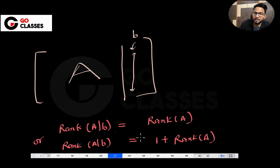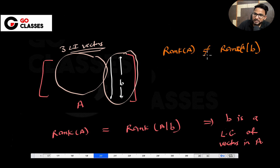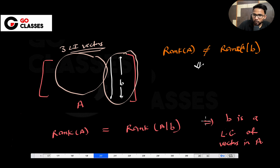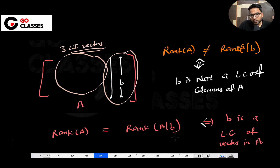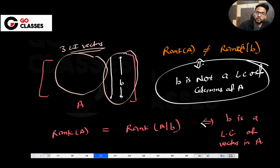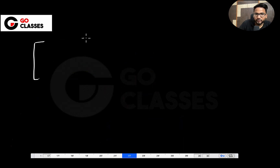In the case where ranks are not equal, it means rank of [A|b] equals one plus rank of A, which definitely means b is not a linear combination of the columns of A. So the key takeaway: if both ranks are equal, b has not added anything. If both ranks are not equal, b has added one linearly independent vector, meaning b is not a linear combination of the columns of A.